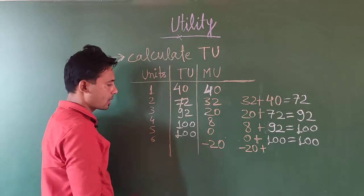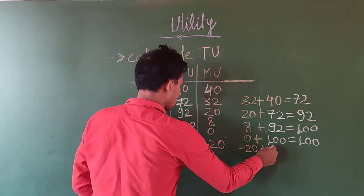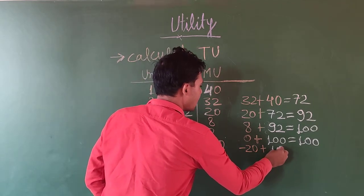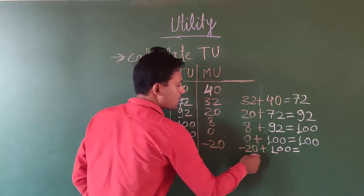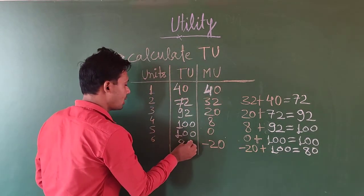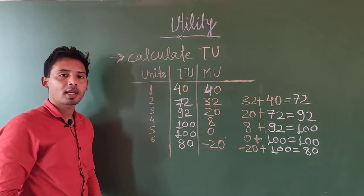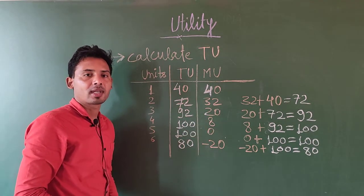Minus 20 is given, so minus 20 plus 100 is equal to 80. So we have 80 here. This is how we have to calculate total utility.